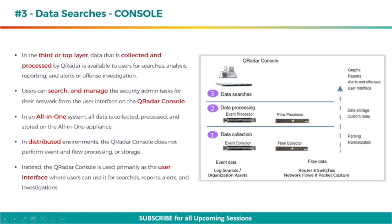In the third or top layer, data that is collected and processed by QRadar is available to users for searches, analysis, reporting, and alerts or offense investigation. Users can search and manage the security admin tasks for their network from the user interface on the QRadar console. In an all-in-one system, all data is collected, processed, and stored on the all-in-one appliance. In distributed environments, the QRadar console does not perform event and flow processing or storage. Instead, the QRadar console is used primarily as the user interface where users can use it for searches, reports, alerts, and investigations.